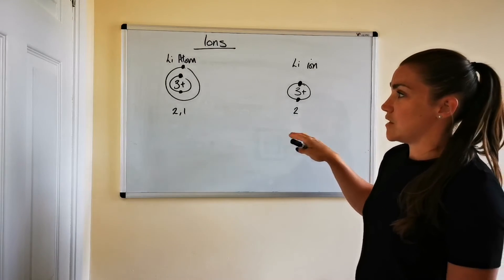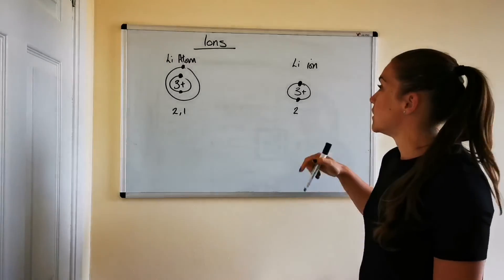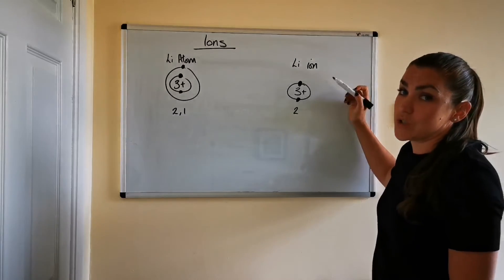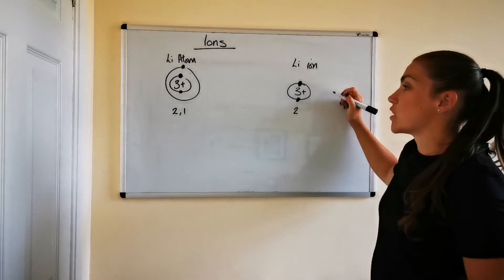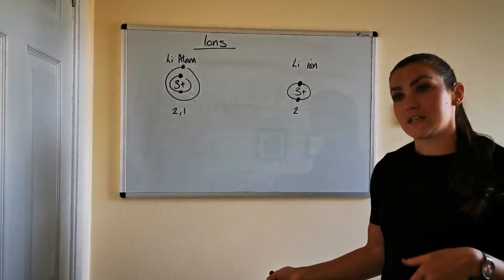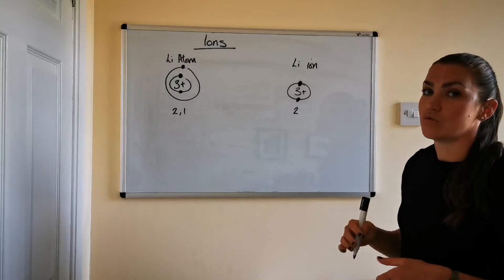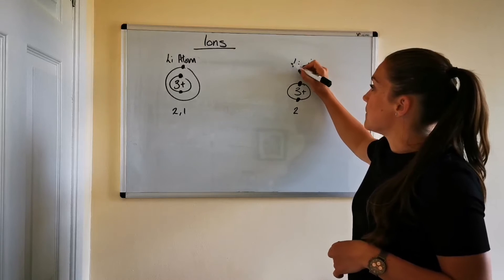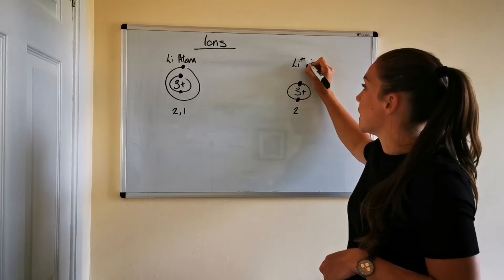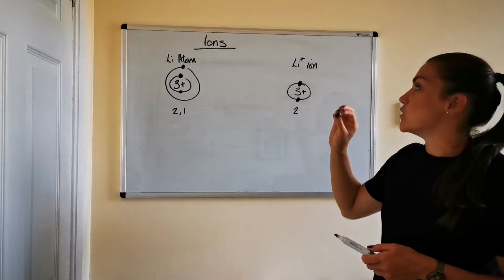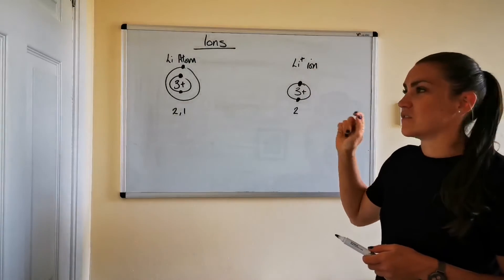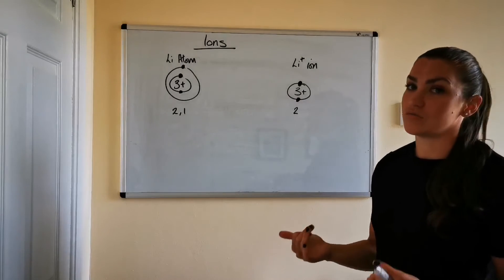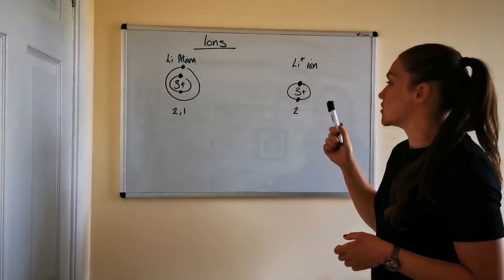Now because the lithium has lost one electron it's not neutral anymore because there's three positive charges in the middle and now there's only two negatives. So because we've got three positives and only two negatives that means it has a net overall charge of one positive. So if we were going to write the chemical symbol for a lithium ion we would write Li positive. We don't need to put the one in front of the positive just like in maths when you're doing algebra if you've just got one x you just write x you don't write one x. So it's the same with charges in chemistry.